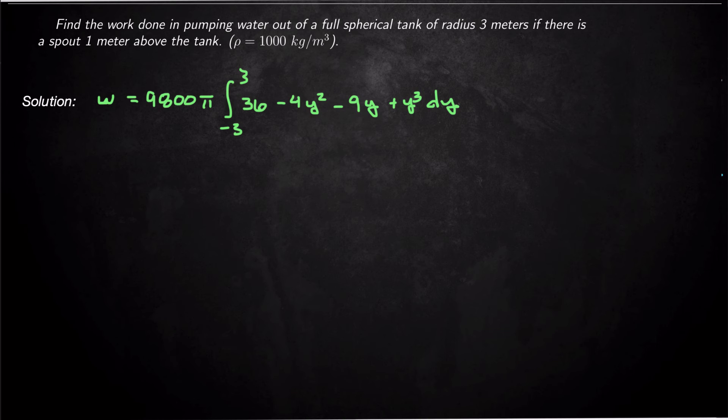So let's see what that ends up being. So I can pull that 9,800 π out. So W is going to equal 9,800 π integral from -3 to 3. We're going to be 36y - 4y² - 9y + y³ dy. Alright, so we're over a symmetric interval. And if we're over a symmetric interval, the odd pieces will integrate to 0. So this integral is going to be 0 and the integral of y³ over the symmetric interval will be 0 since those are both odd functions.